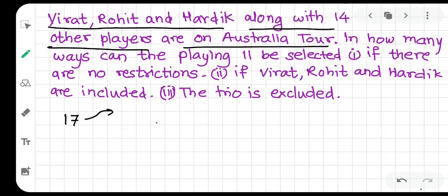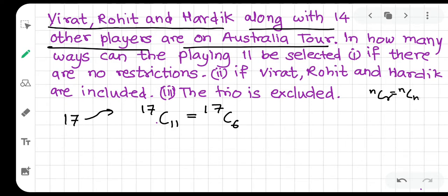We need to select 11 players — we are not arranging batting order, just selecting who goes on the ground. Obviously it is a combination: 17C11. This is the answer. 17C11 is also equal to 17C6, because nCr = nC(n−r). You can simplify and solve from here.